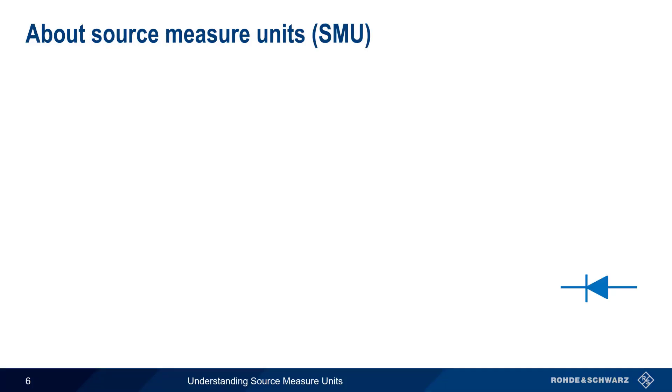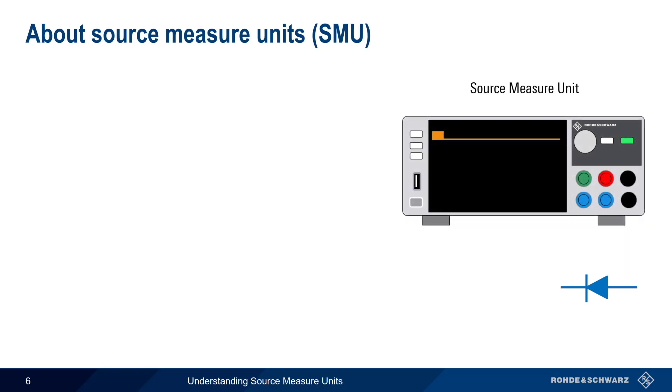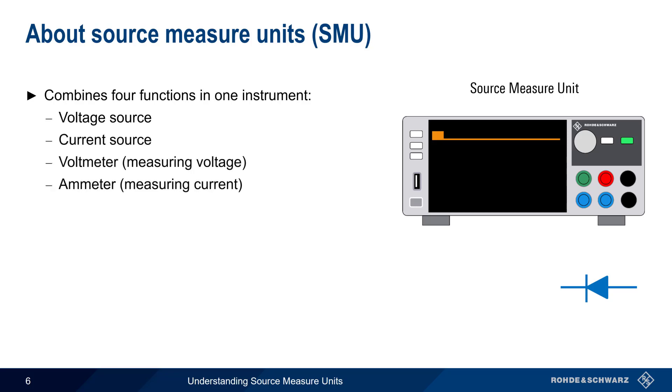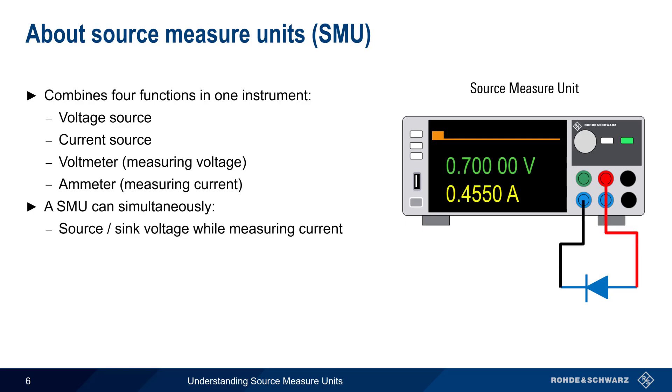A more efficient approach is using an instrument called a source measure unit, or SMU. As the name implies, a source measure unit combines four functions into one instrument, namely a voltage source, a current source, a voltmeter, and an ammeter. What this means is that a source measure unit can simultaneously source or sink voltage while measuring current, so we can use a single SMU to characterize our diode.